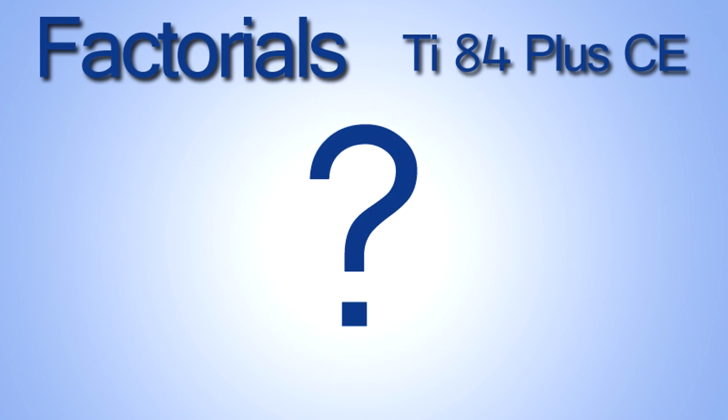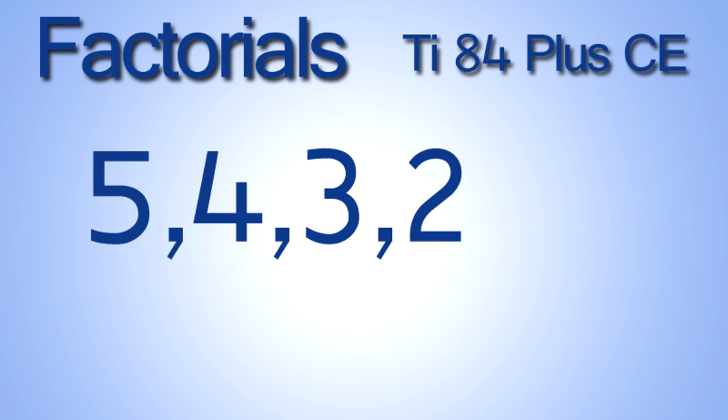But first, what is a factorial? A factorial is when you take a number, let's use the number 5, and we multiply that number 5 by all the numbers below it.